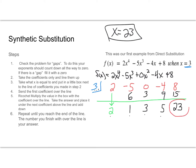And that is our answer — 23. Compared to what we got with direct substitution, that was our answer before. Once you get the hang of synthetic, a lot of people prefer it over direct substitution because you're not worried about exponents or power-to-power calculations — it's just straight multiplication. But it can be tricky, so let's take a look at the next one.